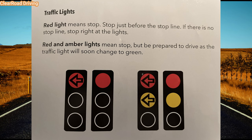Second, red and amber light. This is a transition period before the light changes from red to green. When the light is red and amber, it means the light was red previously and is now soon going to change to green, so you need to get ready for moving.